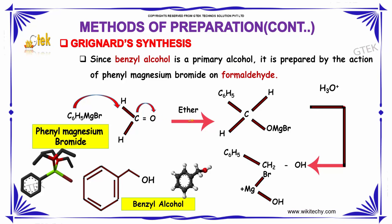This involves the production of an ether intermediate. On further addition of H3O+, we obtain the cross-linked product and removal of the OH group, finally forming benzyl alcohol.